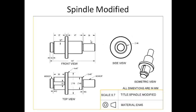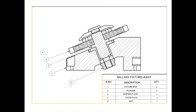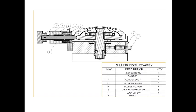This is the modified spindle and we fix it here properly. We reduced the height, but we faced another problem — it was not stable. So we use another device called a lock screw holder. The lock screw holder and lock screw together hold the spindle constantly.